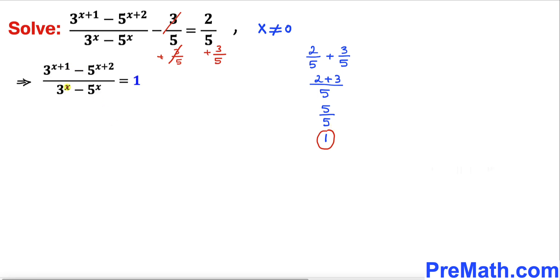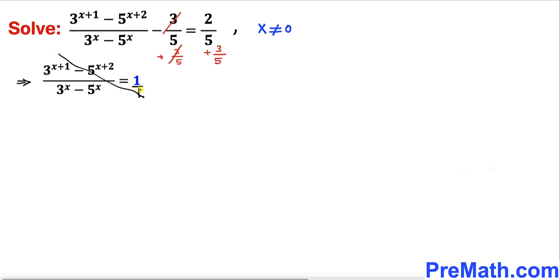So therefore this big fraction turns out to be equal to 1 on the right hand side. Now let's make a fraction on the right hand side by just putting 1 underneath, and now we are going to cross multiply.